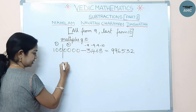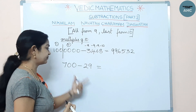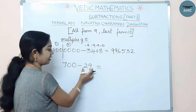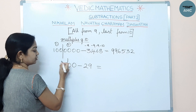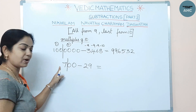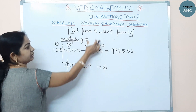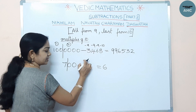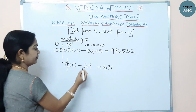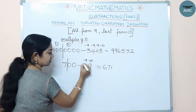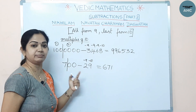Let's take another example: 700 minus 29. The subtrahend has two digits, so make a partition after two digits from the right of the minuend. The first part 7 is reduced by one to give 6. For the second part, apply the sutra: 9-2=7, 10-9=1. The final answer is 671.